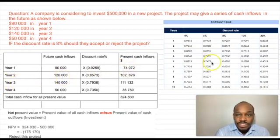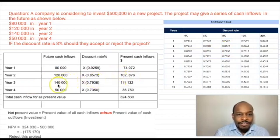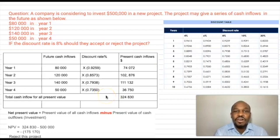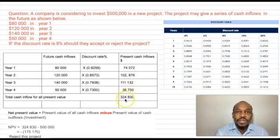For year two, $120,000 — go back to the table, look for year two: the discount factor is 0.8573. Multiply that by $120,000 and you get $102,872. I've done the full calculation here for you, so you can pause the video and look at what I've done. After you have all the present cash inflows, you need to total them all. The total present cash inflows come to $324,830.